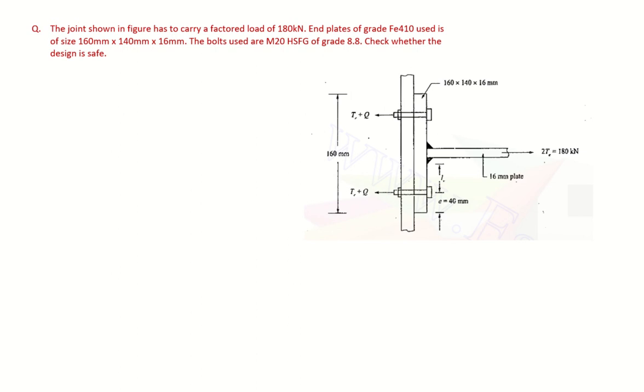See the question. The joint shown in the figure has to carry a factored load of 180 kN. The end plates of grade FE 410 are used and sizes 160 mm by 140 mm by 16 mm. The bolts used are M20 HSFG bolts of grade 8.8. Let us check whether the design is safe or not. So let us write the data given. Here is the load. So here is the load. 2 times TE is given as 180 kN. So TE is 90 kN. So let me write it as 90,000 N.